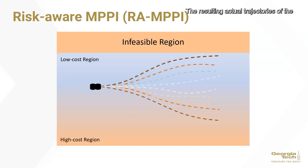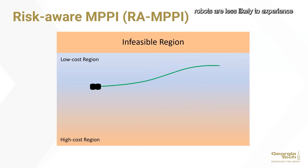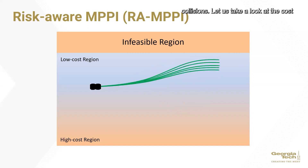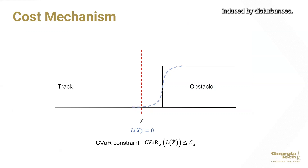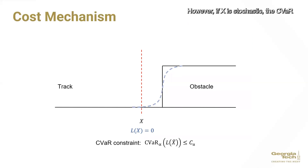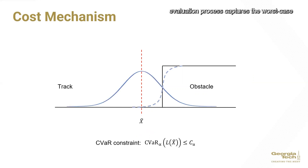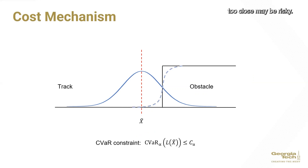The resulting actual trajectories of the robots are less likely to experience collisions. Let us take a look at the cost mechanism behind the scene. When the variable x is deterministic, the cost cannot sense the potential dangers induced by disturbances — the dashed curve shows the cost profile. However, if x is stochastic, the CVaR evaluation process captures the worst-case scenarios and alerts controllers that getting too close may be risky.